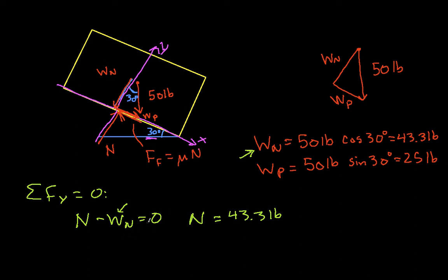And if we now look at the sum of the forces in the x direction, we have that for things to be in static equilibrium, W P minus F sub F is equal to zero. The maximum F sub F that we can have, the max F sub F is mu times N. In order for this to be in static equilibrium, we would need this maximum value of F sub F to be equal to W P. Any W P greater than this max F sub F means that the block is going to start sliding.